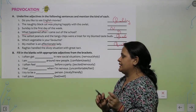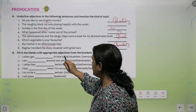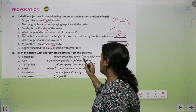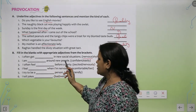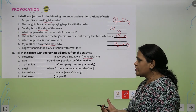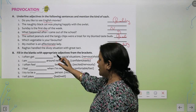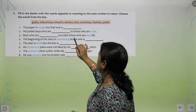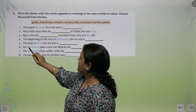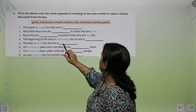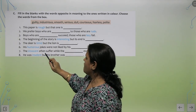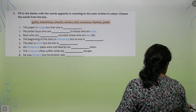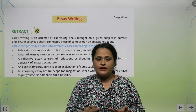Next exercise — fill in the blanks with appropriate adjectives from the brackets. 'I often get nervous in new social situations.' 'I am confident around new people.' 'Boys who are courteous succeed; those who are lazy fail.' 'The deer is timid but the lion is fearless.' 'The innocent often suffer while the guilty escape.' The rest of the exercise please do yourself.